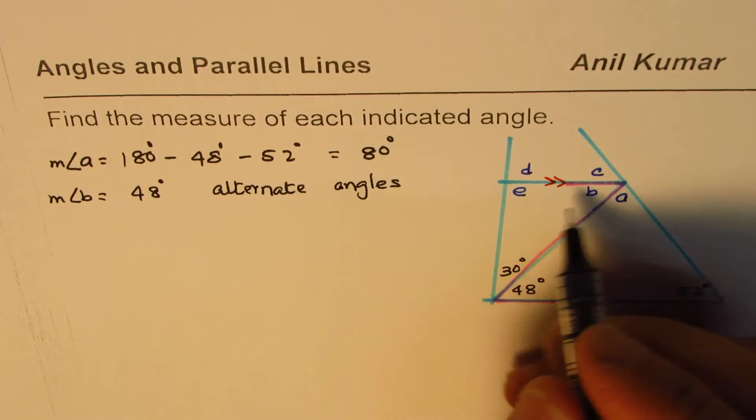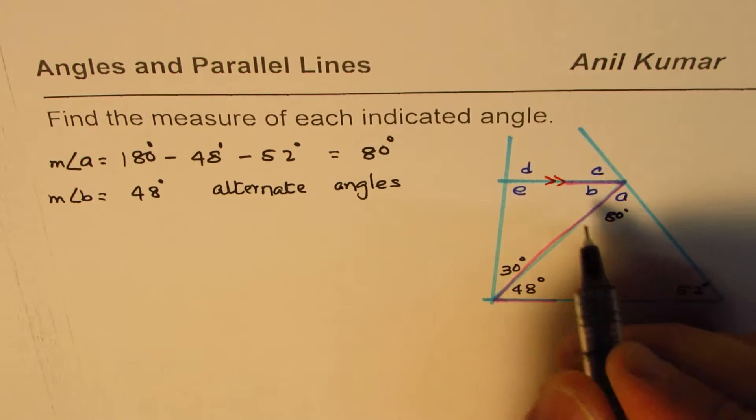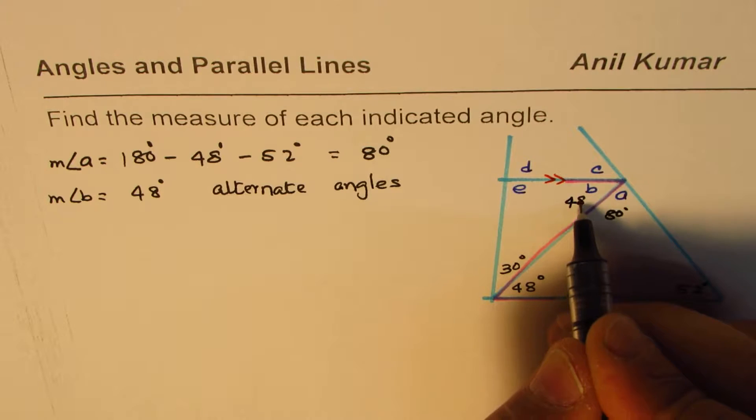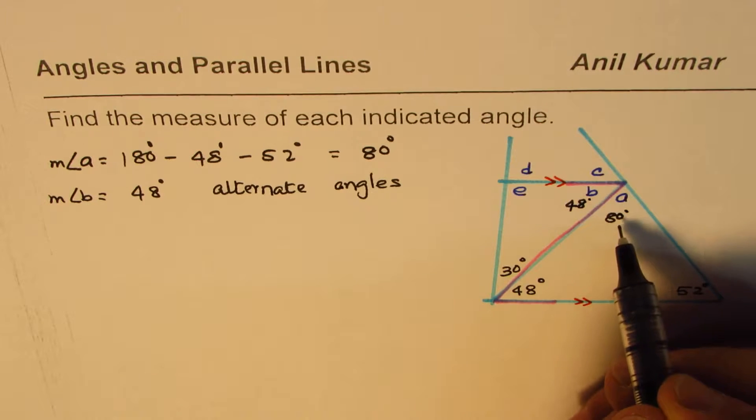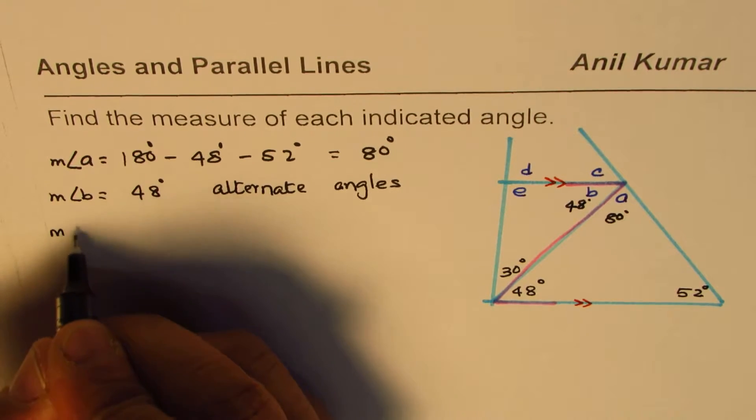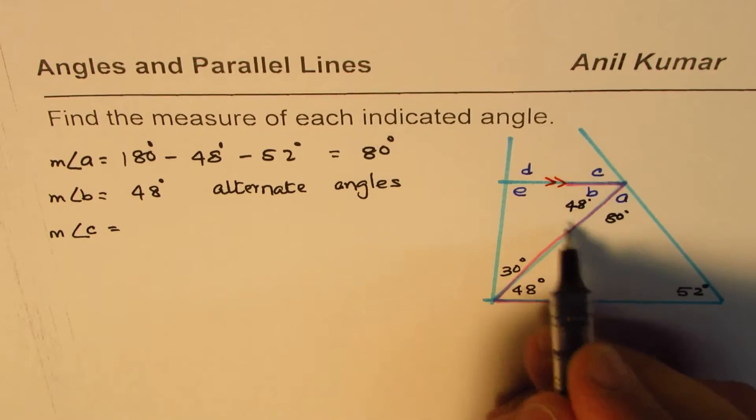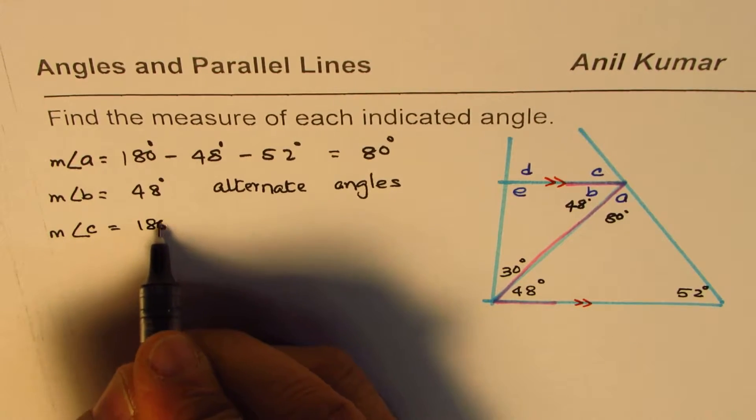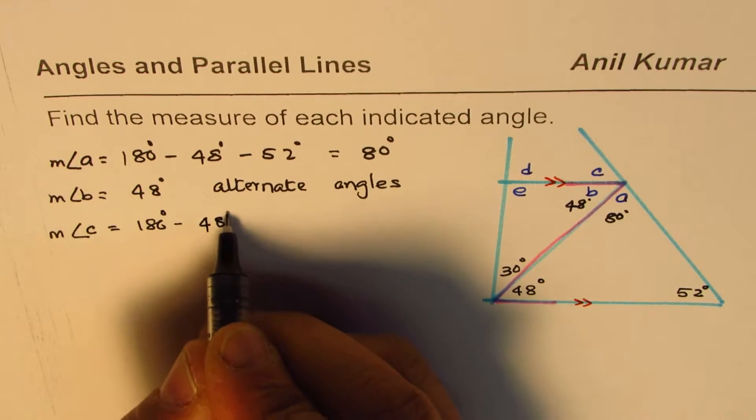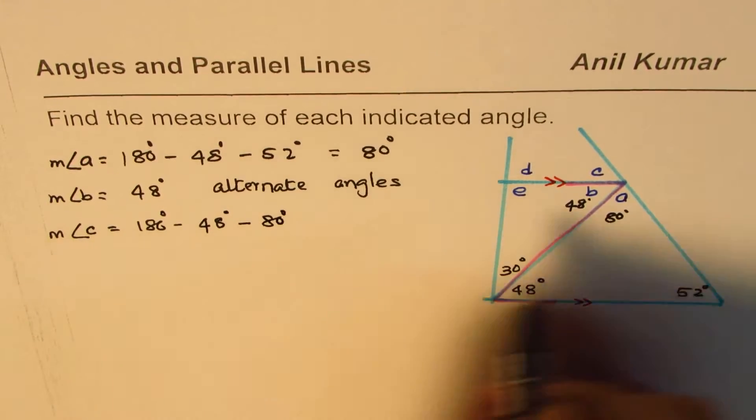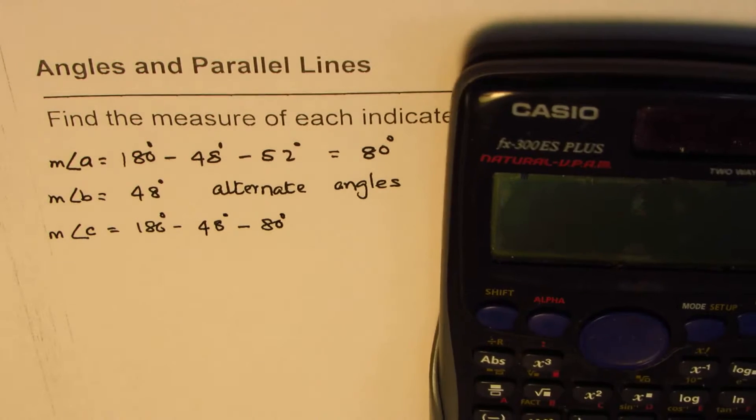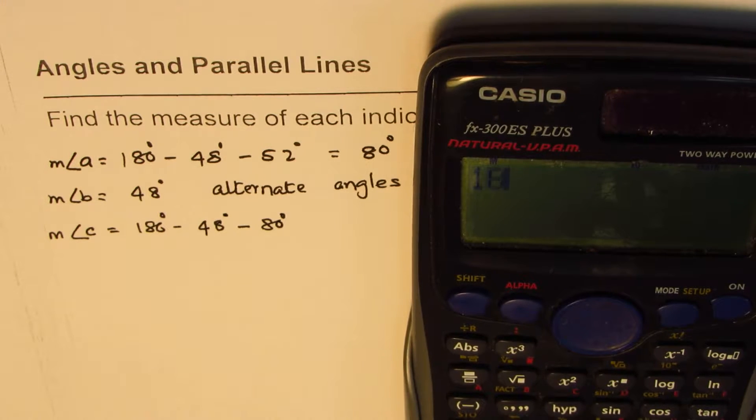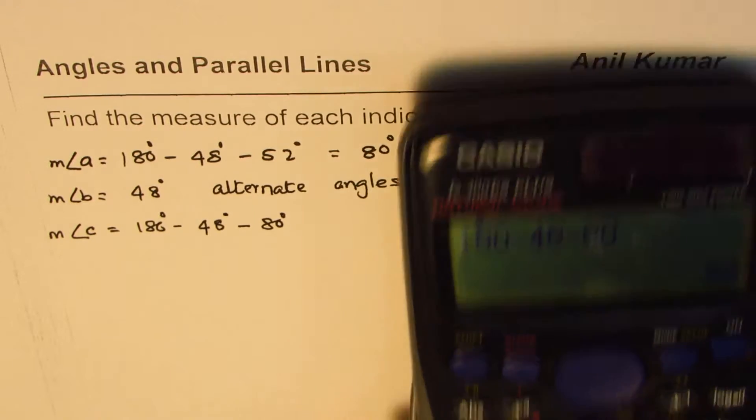Now you know A and B. Let me write down A as 80 degrees here and B is 48. Now C will be 180 minus sum of these two, because it forms a linear pair. So it'll be 180 degrees take away 48 degrees take away 80 degrees. So let me use the calculator once again. We have 180 degrees minus 48 minus 80, so it is 52 degrees.